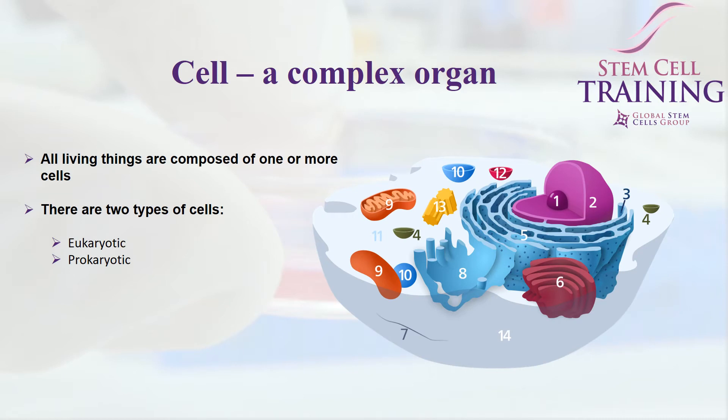A cell is a complex organ. There are many living things that are composed of one or more cells, and there are two types of cells: a prokaryotic and a eukaryotic cell. There are many organelles that make up a cell, including a nucleus, which serves as the brains of the cell.